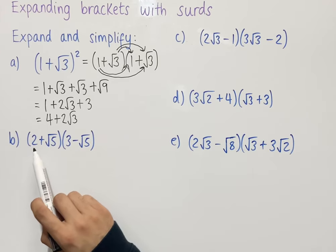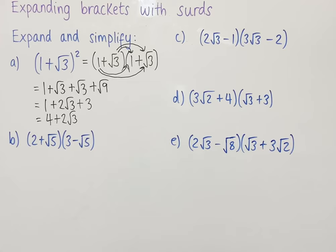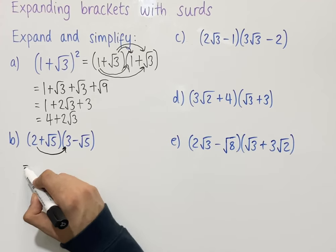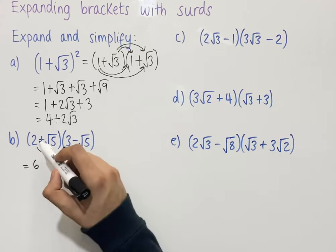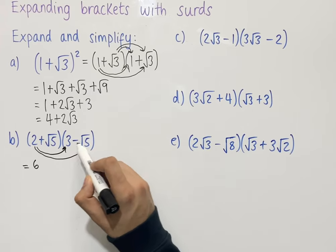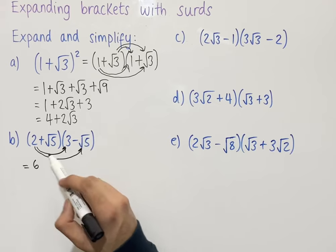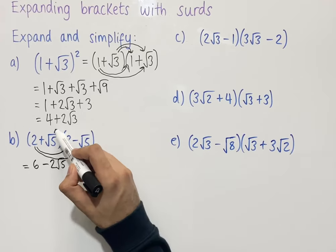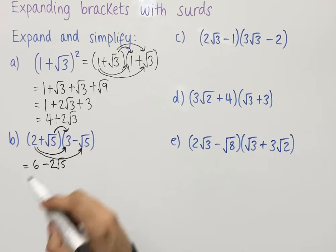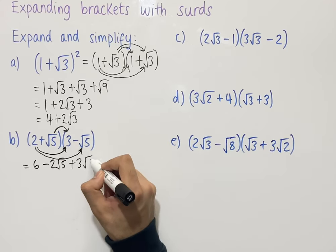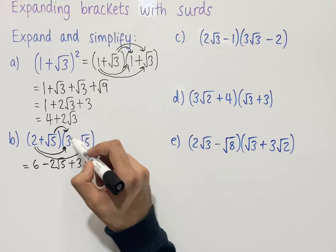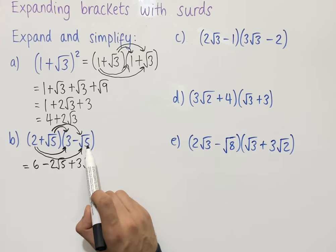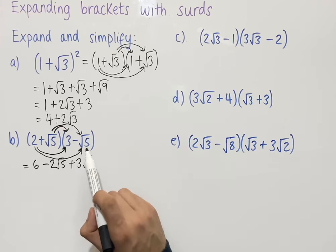For the second question, we're expanding 2 plus root 5 with 3 minus root 5. Again using the FOIL method: the first terms give 2 times 3 equals 6. The outside terms give 2 times minus root 5, which is minus 2 root 5. The inside terms give root 5 times 3, which equals 3 root 5. Finally, root 5 times minus root 5 gives minus the square root of 25, which simplifies to minus 5.